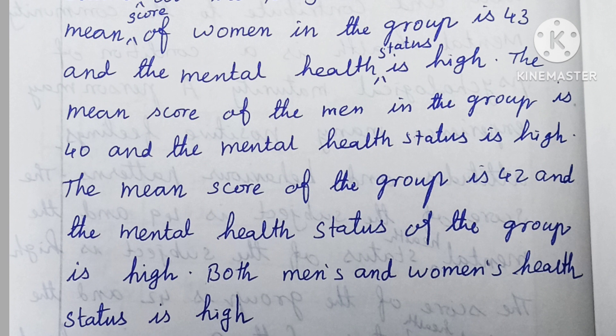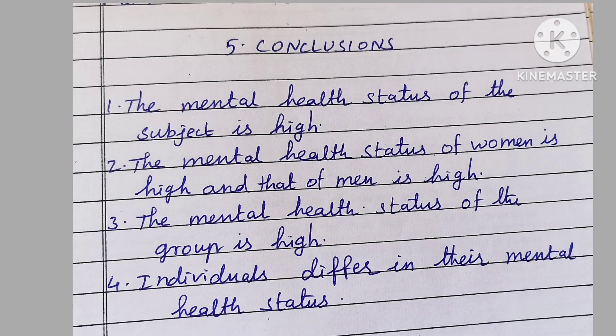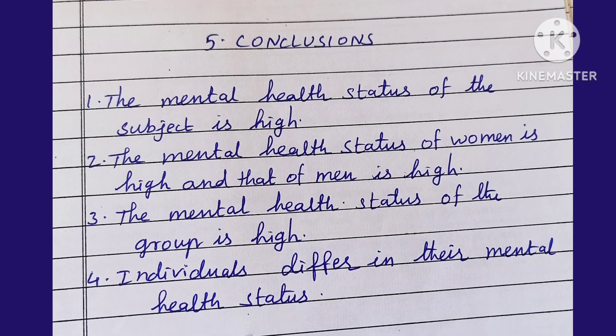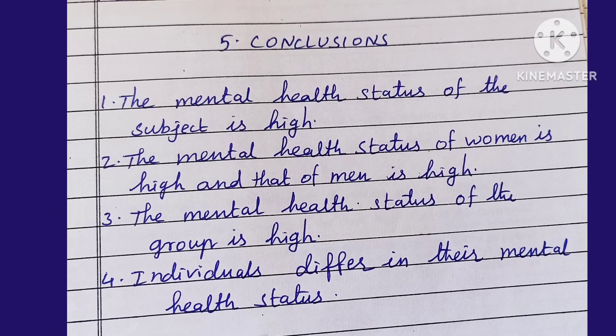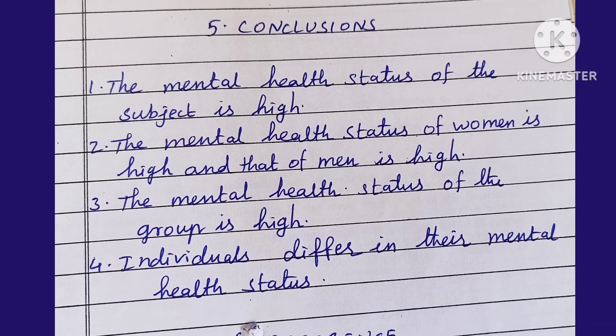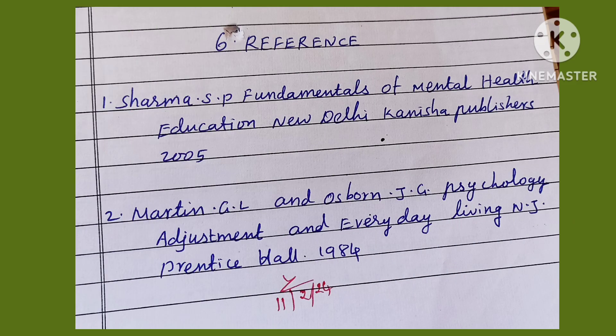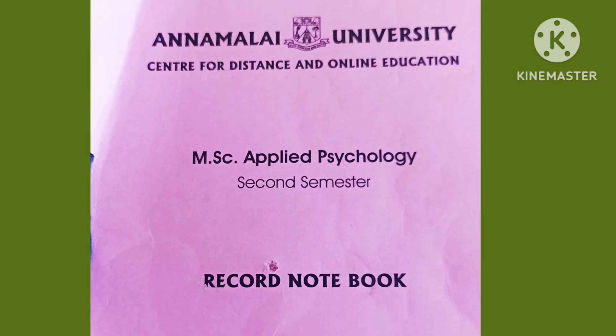After the discussion, we have to write the conclusion. The conclusion has a predefined format in the book itself. After the conclusion, we have to write the reference, which is also given in the practical book. After getting the signature in the observation notebook, we have to move on to the main record notebook.